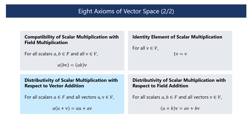Axiom 7 — Distributivity of scalar multiplication with respect to vector addition: For any scalar a and any vectors u and v in the vector space V, multiplying the sum of u and v by a is the same as multiplying each of u and v by a separately and then adding the results. Axiom 8 — Distributivity of scalar multiplication with respect to field addition: For any scalars a and b in the field F and any vector v in V, multiplying v by the sum of a and b is the same as multiplying v by a and by b separately and then adding the results.